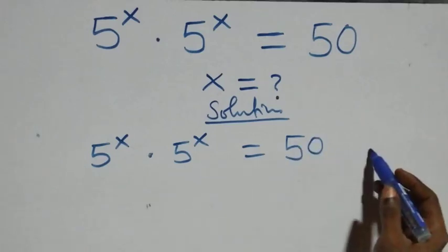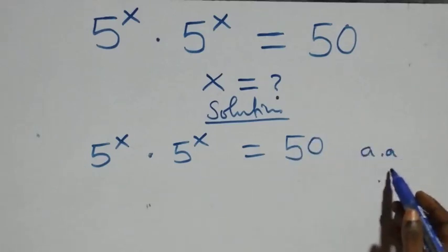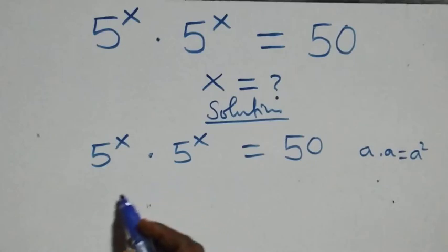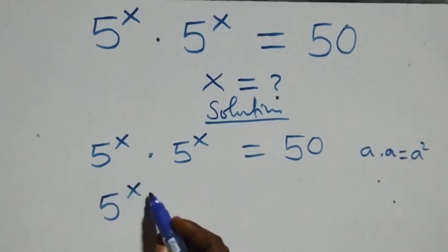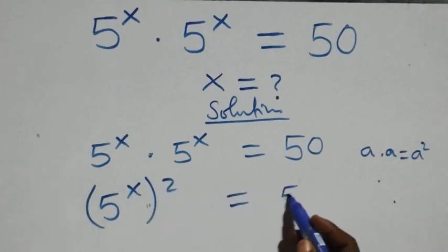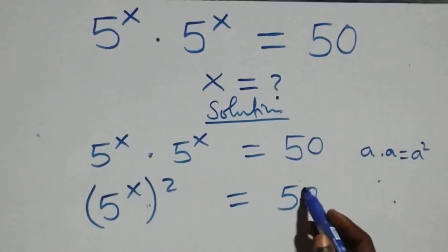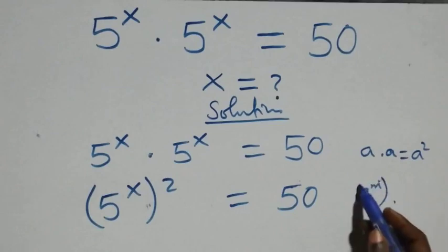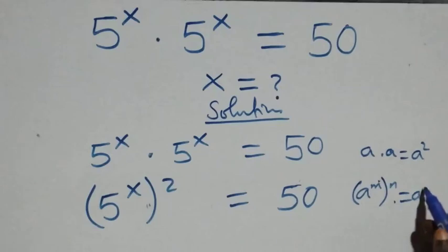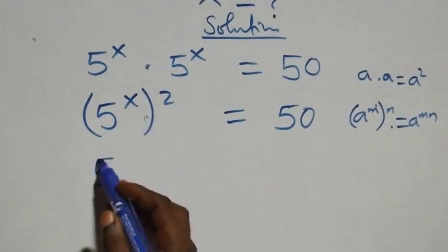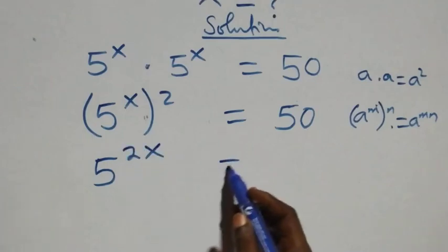This follows from the rule that a times a is the same as a squared. So multiplying, we can write this as 5 raised to the power x, then squared, equals 50. Next, applying the rule that a raised to power n, raised to power n, equals a raised to power m·n, the powers multiply and we have 5 raised to power 2x equals 50.